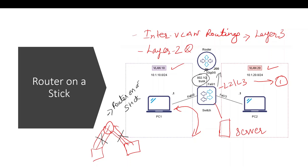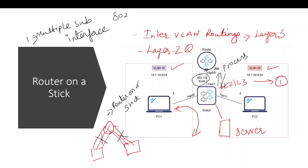To overcome this, you can send traffic using different sub-interfaces on the same physical interface. We will create multiple sub-interfaces. If you do this, it will use 802.1Q. The trunk carries multiple VLANs. We look up the IP address and destination, route the traffic, and use the routing table accordingly.